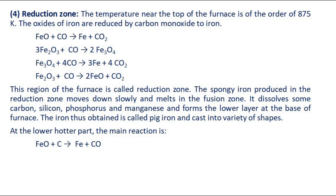The spongy iron produced in the reduction zone moves down slowly and melts in the fusion zone. It dissolves some carbon, silicon, phosphorus, and manganese and forms the lower layer at the base of the furnace. The iron thus obtained is called pig iron and cast into a variety of shapes. At the lower hotter part, the main reaction is the formation of iron and carbon monoxide.